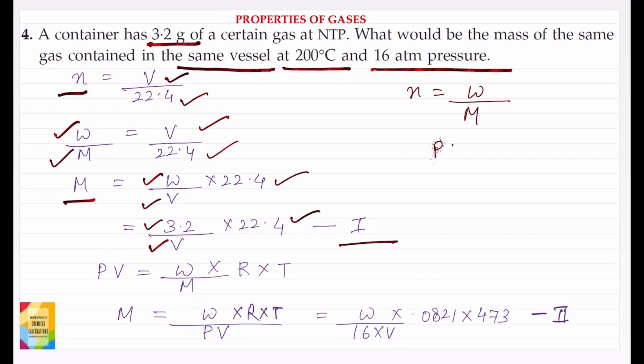Now, PV is equal to nRT, or n value is W divided by molar mass. So we can write PV is equal to W by M times R times T.